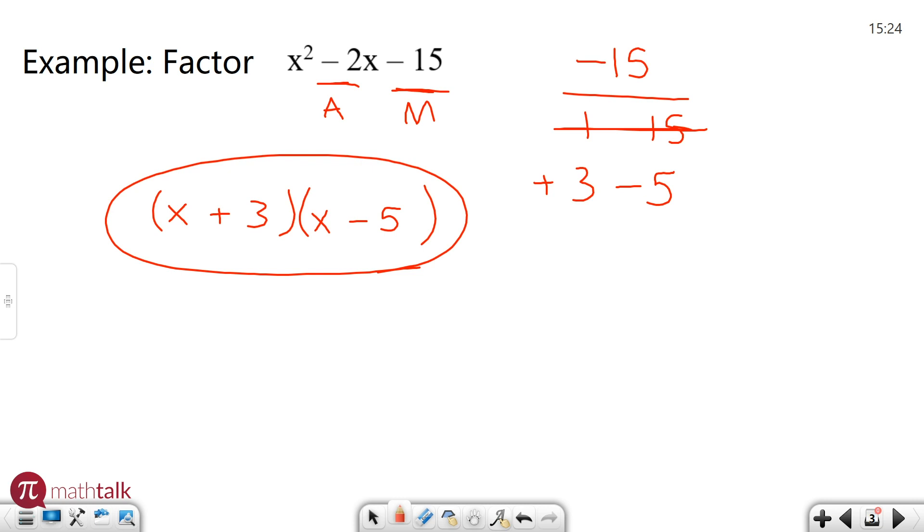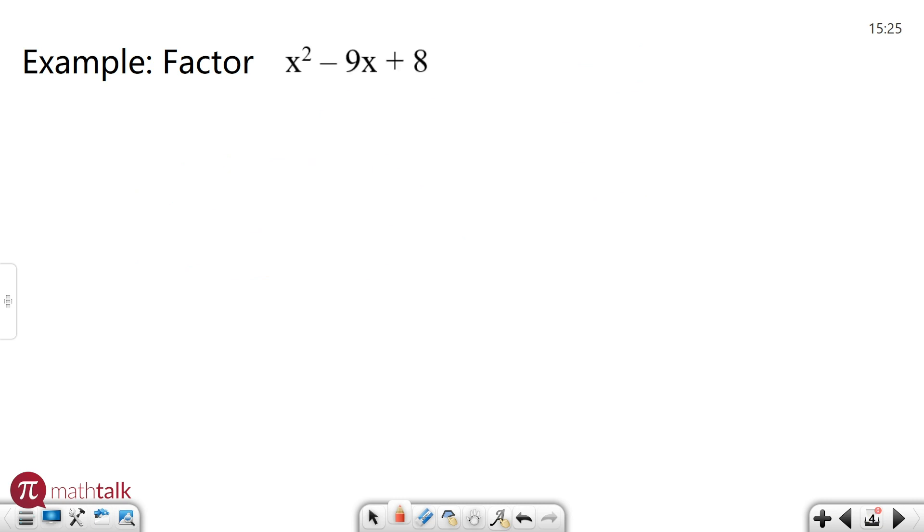All right, let's try one more example to see when we get the hang of it. So factor x squared minus 9x plus 8. I need two numbers that are multiplied together to get positive 8, but add together to get negative 9. So let's look at the factors of 8. Well I have 1 and 8 and I have 2 and 4.